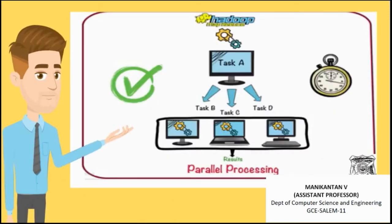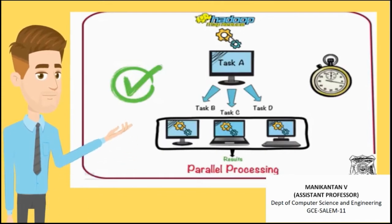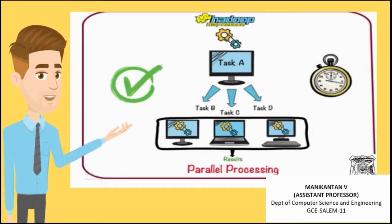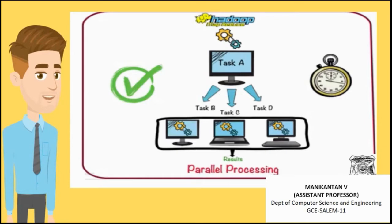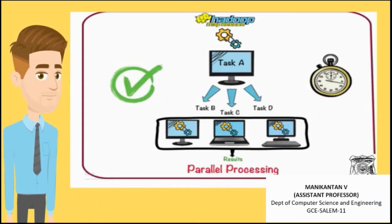MapReduce technique is used to process big data. A lengthy task A is broken into smaller tasks B, C, and D. Now instead of one machine, three machines take up each task and complete it in a parallel fashion and assemble the results. Thanks to this, the processing becomes easy and fast. This is known as parallel processing.